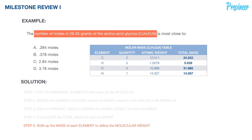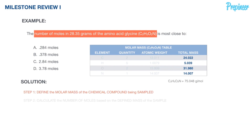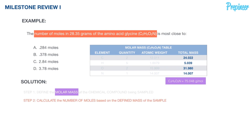We now sum up the mass of each element from the far right column to define the molecular weight of glycine. Adding 24.022 + 5.039 + 31.980 + 14.007, the molecular weight is 75.048 grams per mole. That is the molar mass of one mole of glycine.